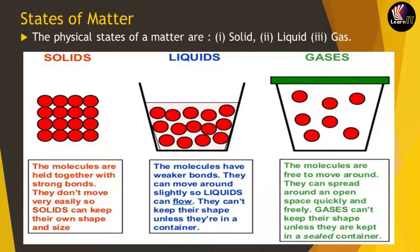Now in liquids, the molecules have a weaker bond — not very weak, but weaker. They can move around slightly, which means a liquid can flow easily, like water. If we keep liquid in a container, it will take the shape of that container. Liquids cannot keep their own shape unless they are in a container.